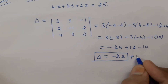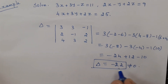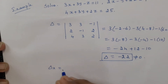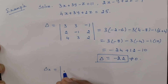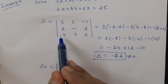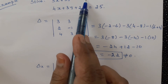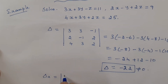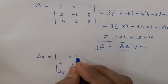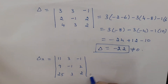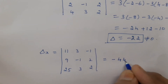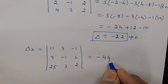Since delta is not equal to 0, we can proceed. Next we find delta x — the determinant obtained by replacing the first column elements, that is all the x coefficients, with the constant terms. The constant terms are 11, 9, 25. So replace the first column by 11, 9, 25 and keep the second and third columns the same. Expanding this determinant, the value of delta x is minus 44.